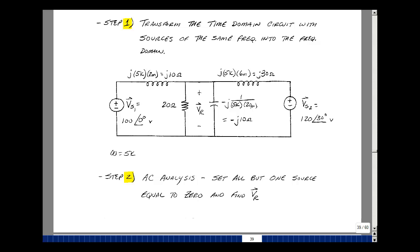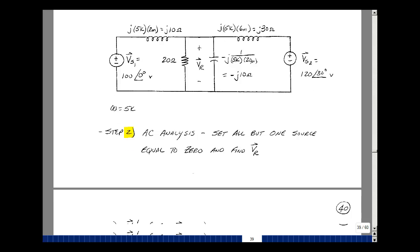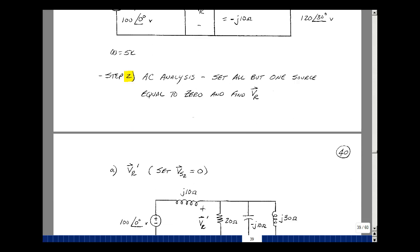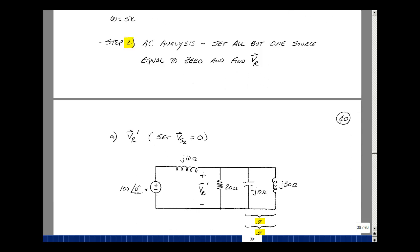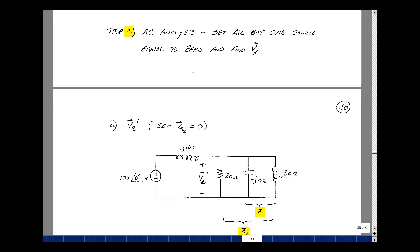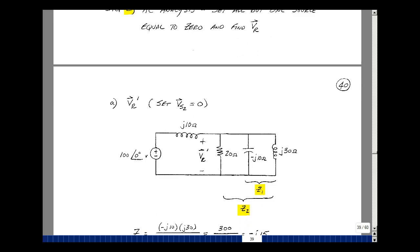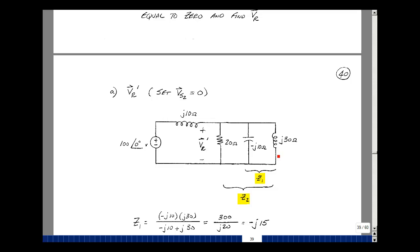We're going to set all the independent sources equal to 0 but 1, find the response due to that, and just repeat that process. So let's call the voltage across the resistor V sub r prime due to the first source, and you can pick either one as your first source. I'll set the source on the right-hand side equal to 0, and that was over here.